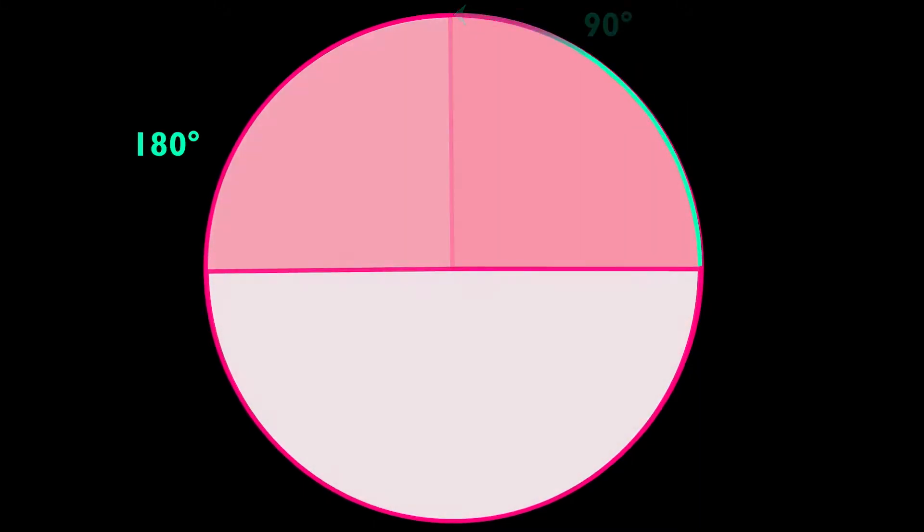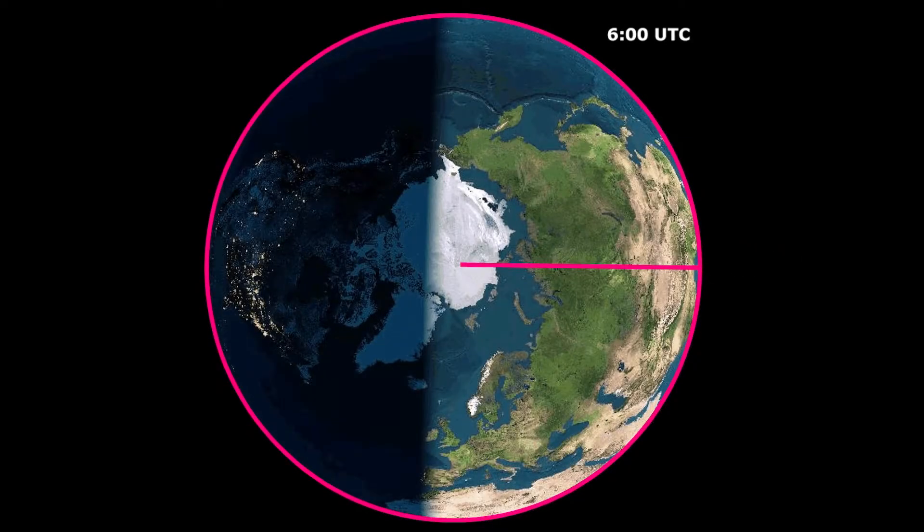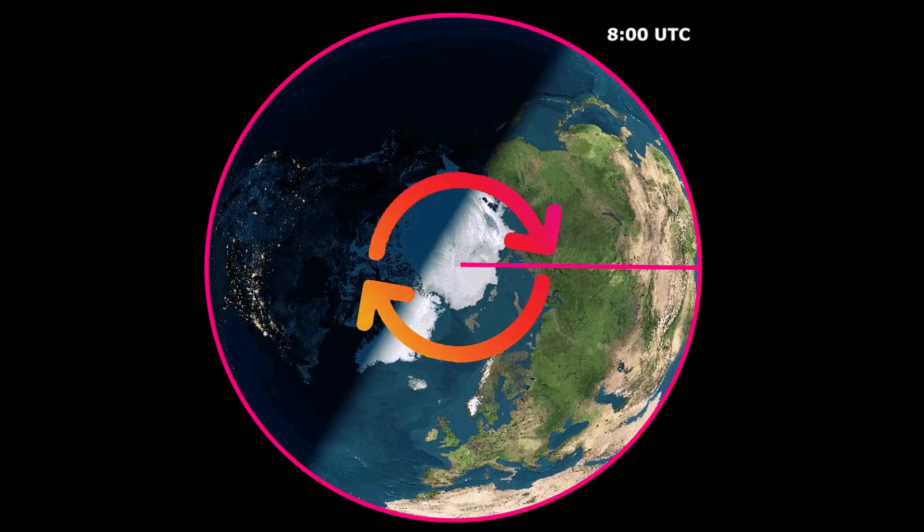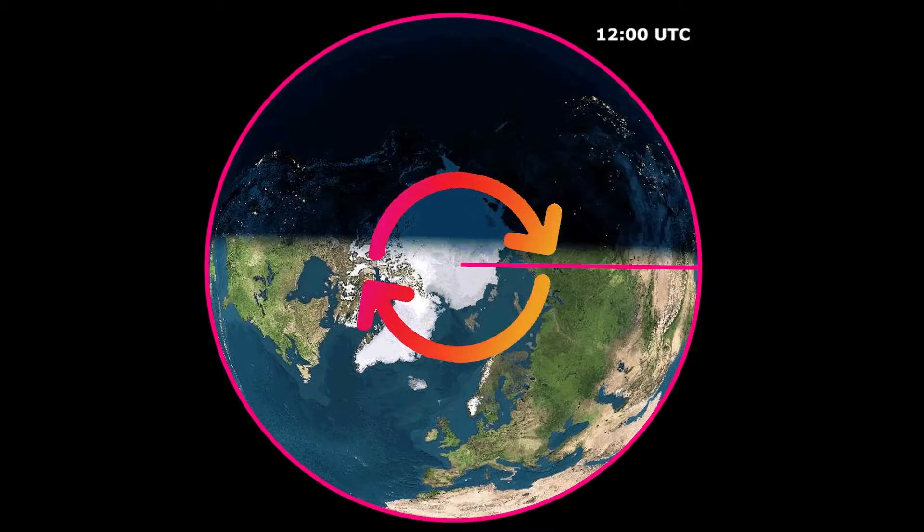One full circle is equal to 360 degrees. So as the Earth rotates on its axis once every 24 hours, it too goes through all 360 degrees in a circle around itself.